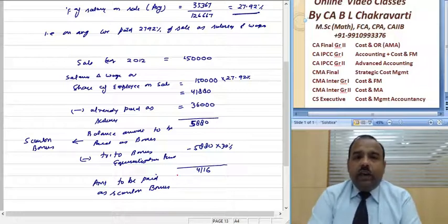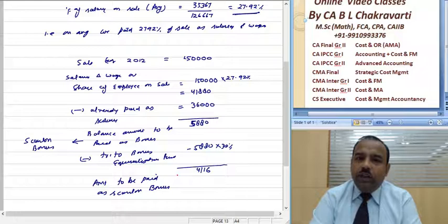The concept is that your salary and wages are linked to your sales. Normally you pay a certain percent of sales as salary and wages. The amount you pay less than this percentage becomes your bonus. Thank you very much, friends.